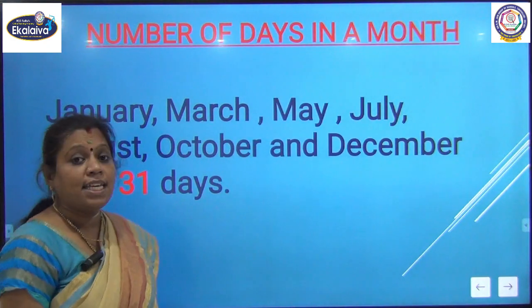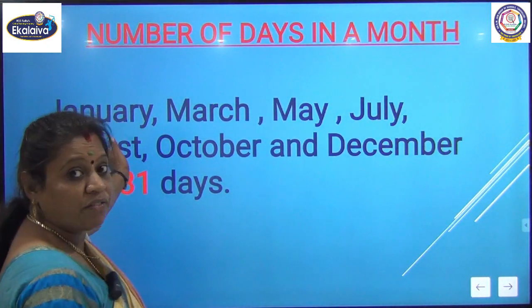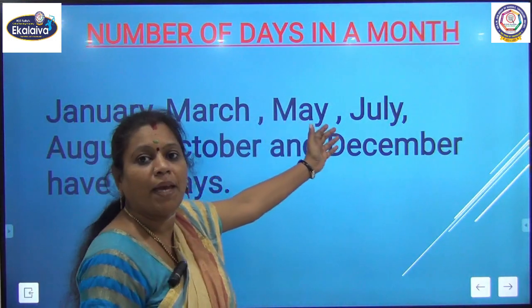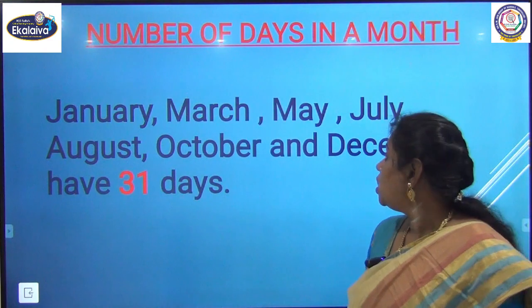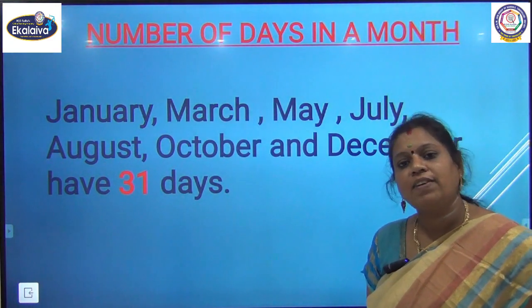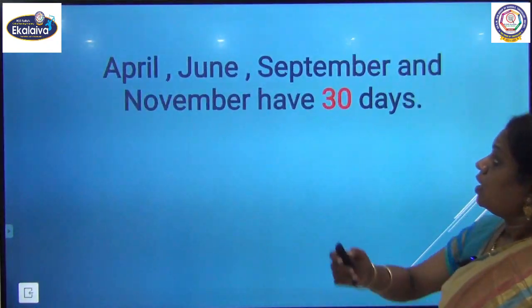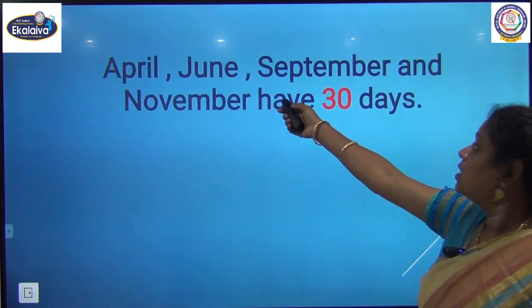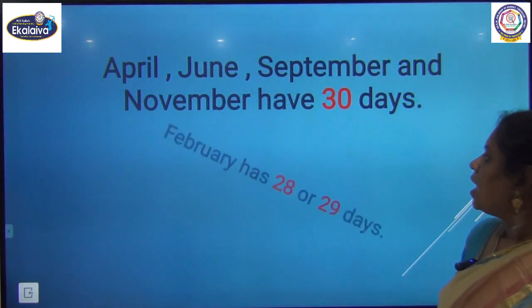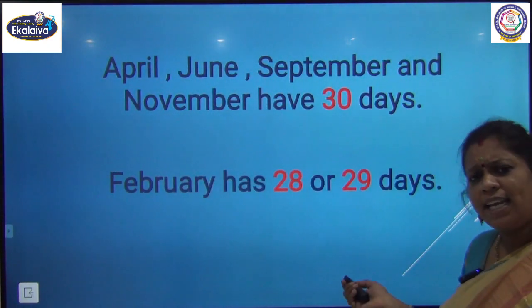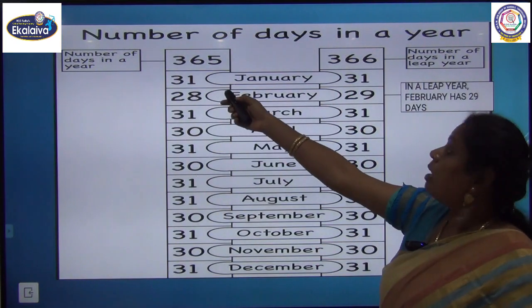Now we will see how many days are there in each month. January, March, May, July, August, October and December have 31 days. April, June, September and November have 30 days. February has 28 days or 29 days.